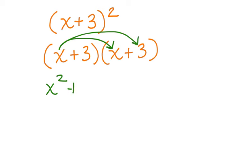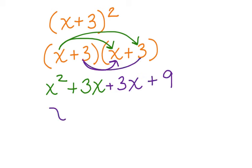x times 3 is plus 3x. 3 times x is plus 3x. 3 times 3 is plus 9. Now we have x squared. We combine like terms plus 6x plus 9.